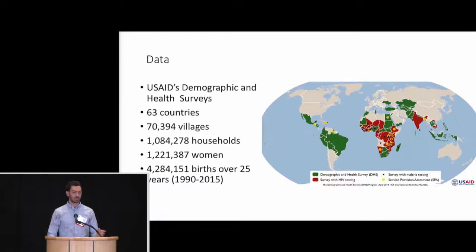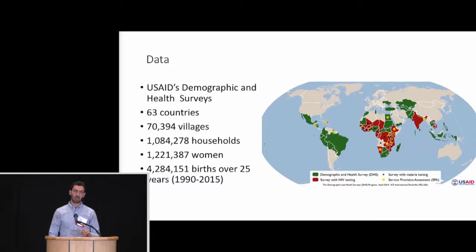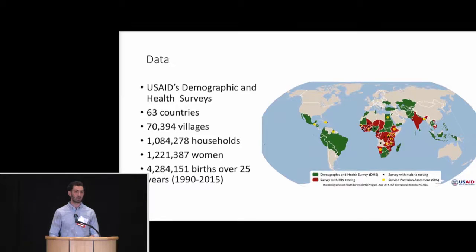This map shows every country that a DHS survey has been done in. I limited my data set to all births that occurred between 1990 and 2015 — I pooled every country that had a DHS survey in that period, included all women who had given birth, and turned that into a births-level data set. So the rows of my data set are births, and we follow those over time. This covers 63 countries, over 70,000 villages — or DHS clusters — over a million households, 1.2 million women, and altogether over 4 million births.